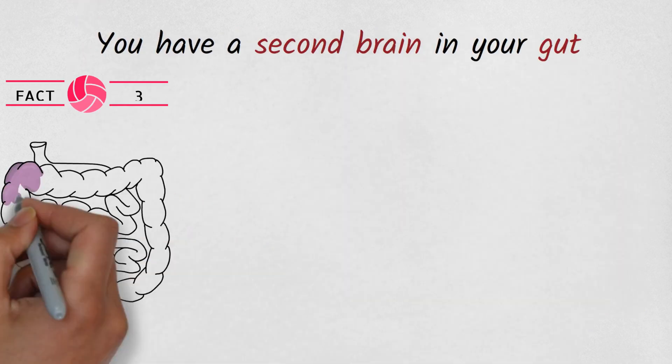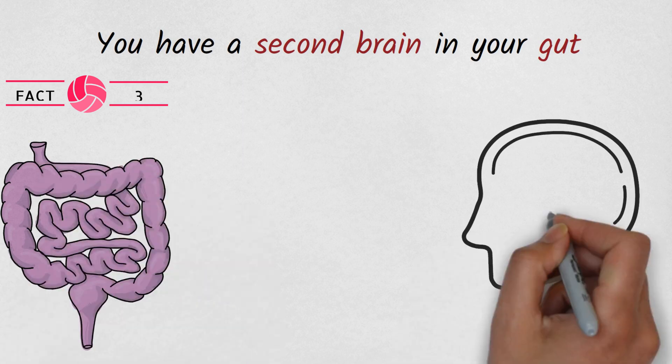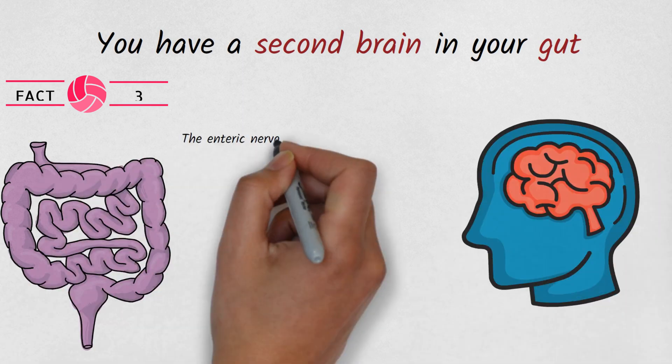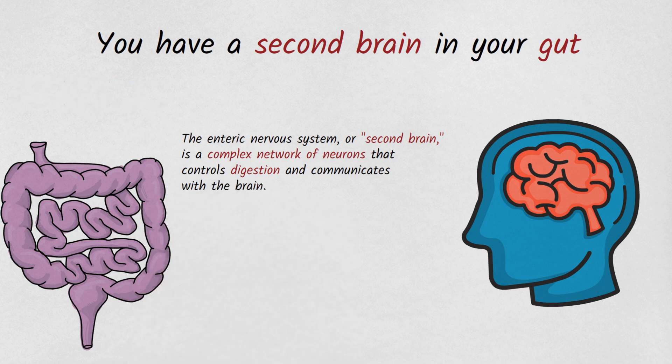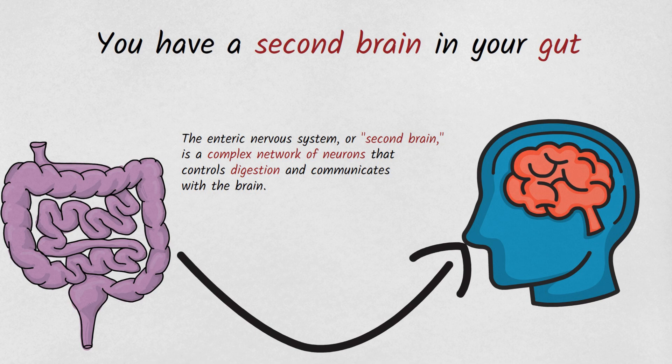Fact number 3. You have a second brain in your gut. The enteric nervous system or second brain is a complex network of neurons that controls digestion and communicates with the brain.